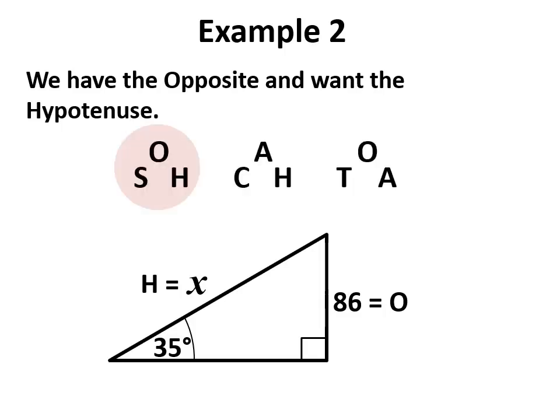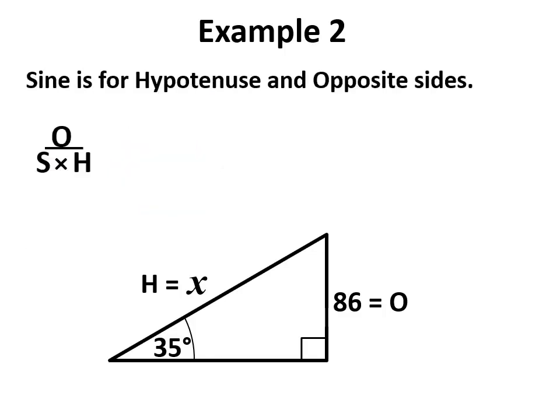Calling up SOHCAHTOA again, opposite and hypotenuse is a sine relationship, so we're in the SOH. But this time we want hypotenuse, so when that's taken out, we have our relationship is O over S, which is O divided by S.